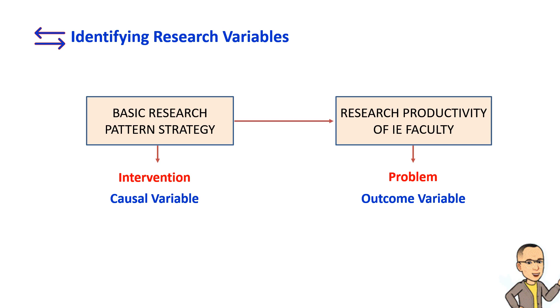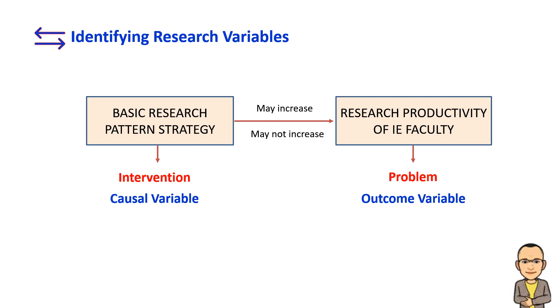The causal variable — basic research pattern or BRP strategy — may or may not cause change to the outcome variable. If the intervention is effective, that change is the increase of research productivity from low to high.